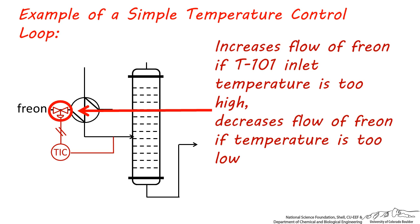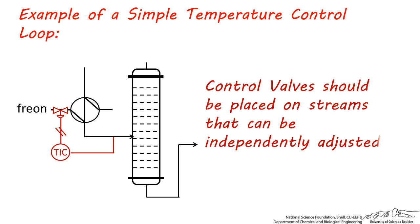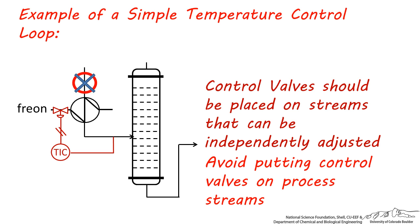Notice also this valve is placed on the freon stream going into the heat exchanger. This is because the flow of freon can be easily adjusted. It's important to remember that control valves should be placed on streams that can be independently adjusted. They should not be placed on streams that cannot be adjusted, such as this process stream. Because the freon comes from a refrigeration loop independently operated from this process, its flow can be increased or decreased without adversely affecting the rest of the process. In other words, avoid putting control valves on process streams unless they're at the very beginning or end of a process.